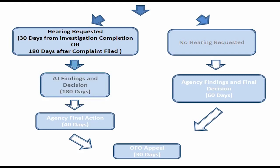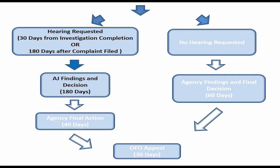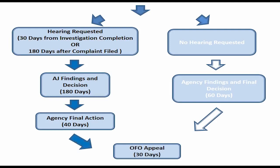If you choose a hearing, an Administrative Judge will take control of your case and issue findings and a decision. The agency will then have 40 days from the receipt of the AJ's decision to issue a final order. If the agency disagrees with the AJ's decision in any manner in its order, you must simultaneously appeal the decision to EEOC's Office of Federal Operations.